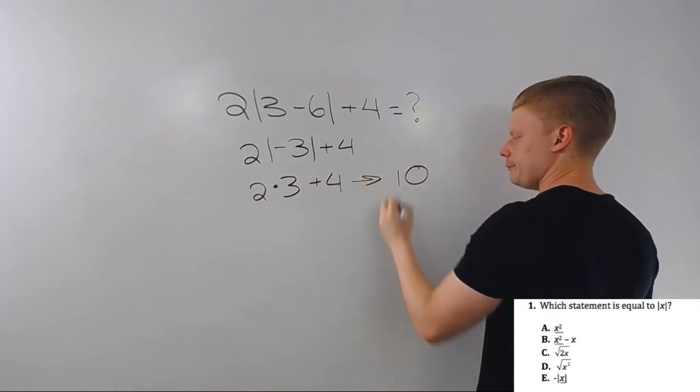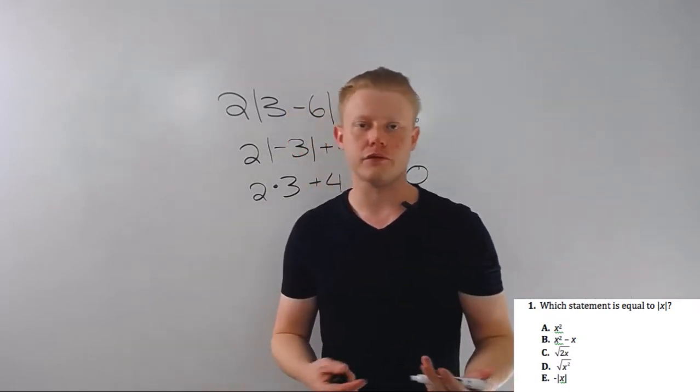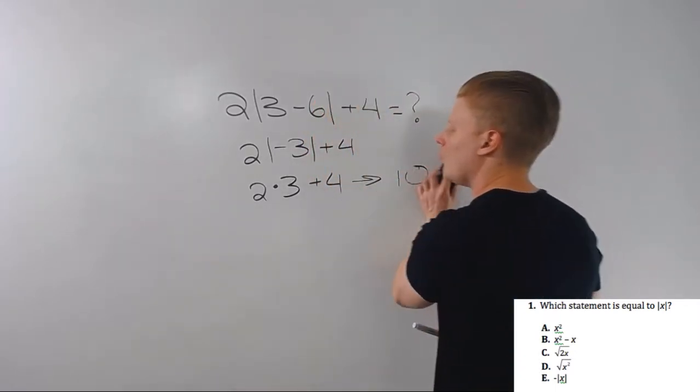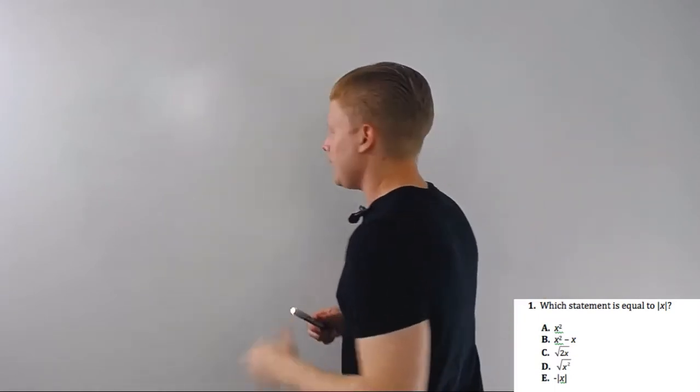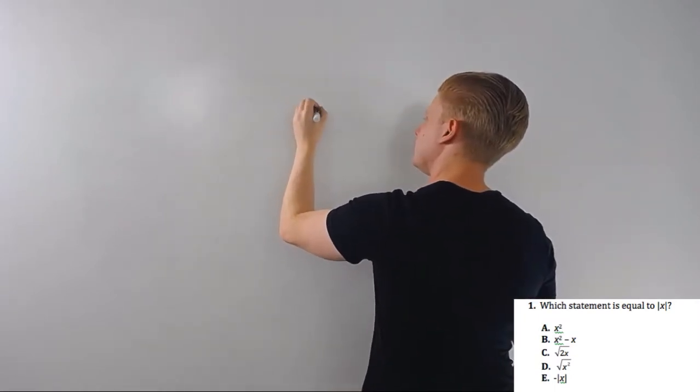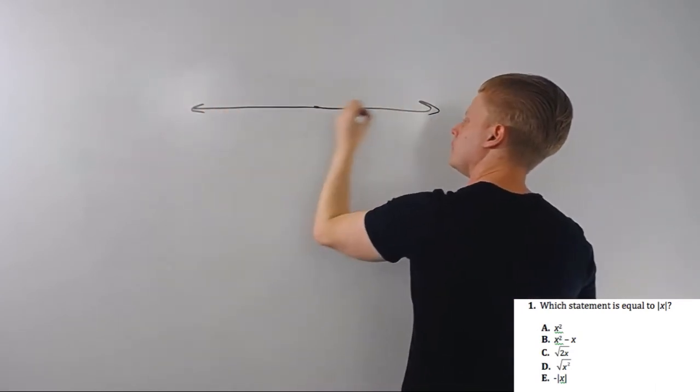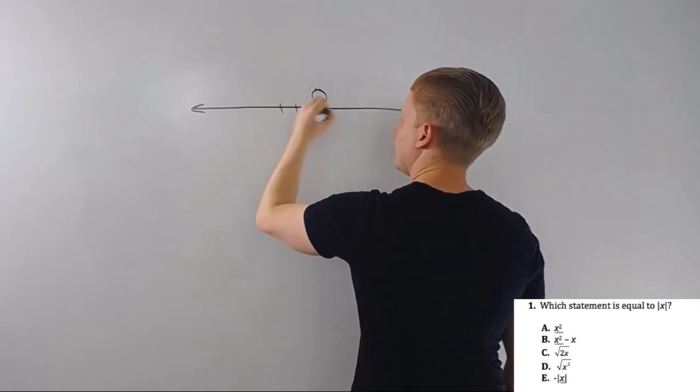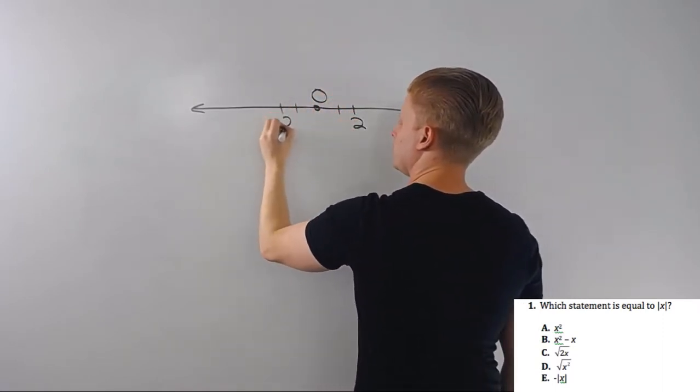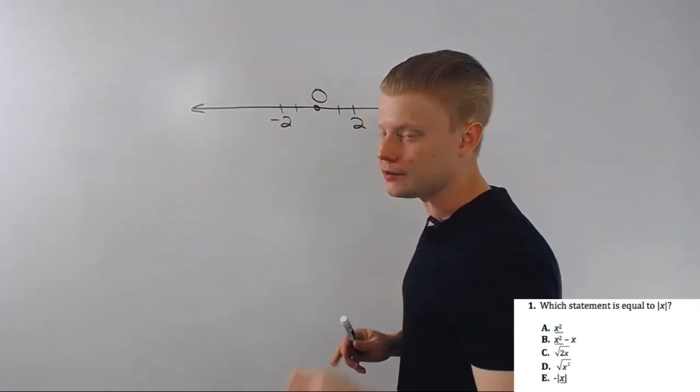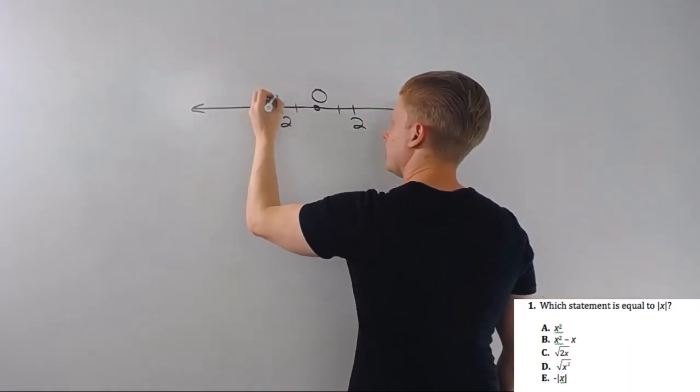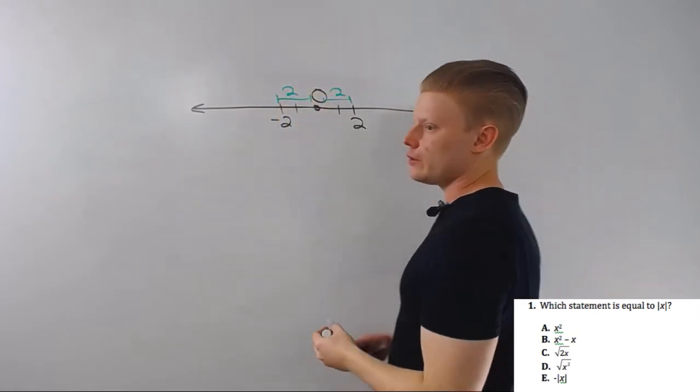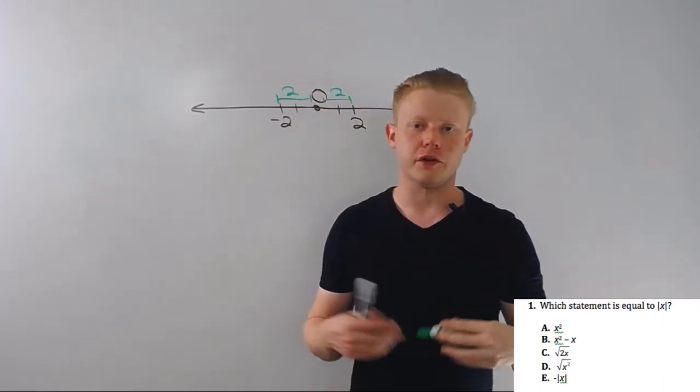Plus four is ten. Remember what absolute value does is it just turns everything positive. When we talk about absolute value, what we're really talking about is the distance from zero a number is on the number line. If this is zero on our number line, and this is two and negative two, they both have a distance of two from zero. Both have an absolute value of two.